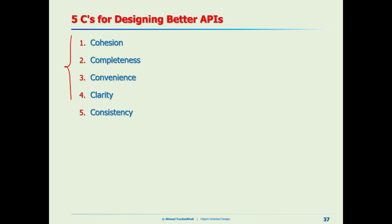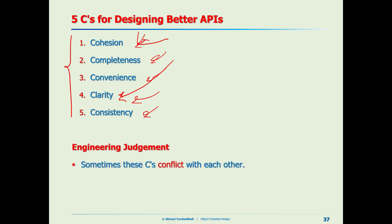Let me summarize. We talked about five C's: cohesion, completeness, convenience, clarity, and consistency. From time to time there might be conflicts between these — for example, keeping cohesion strict might affect clarity. How do you resolve that? It depends on your judgment. You need to use your judgment and make a balance between all five parameters.